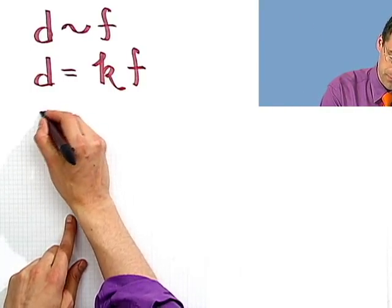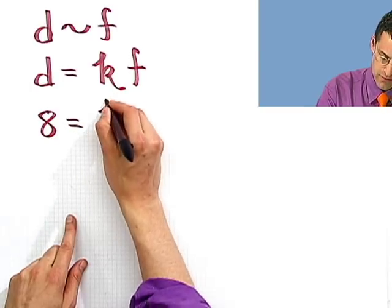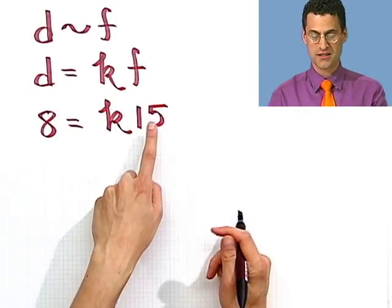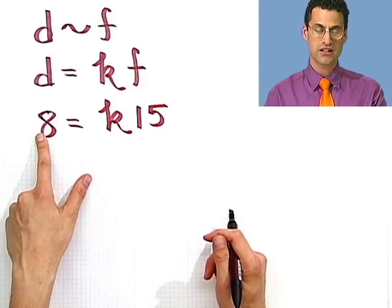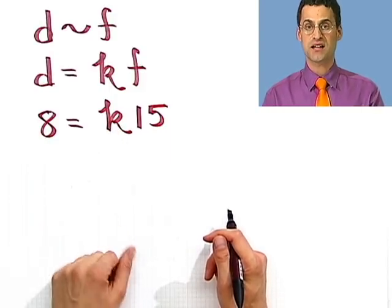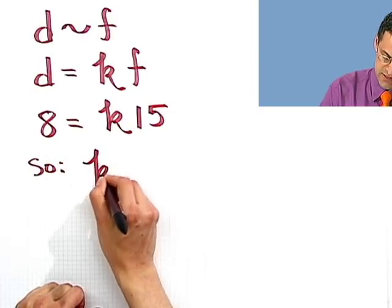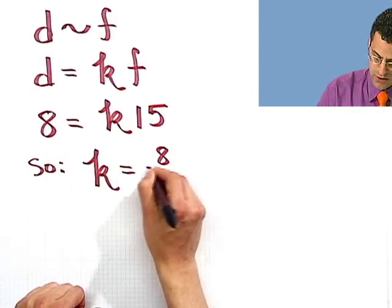So in fact, if I put in 8 here and 15 here, I know this has to hold. Because with a force of 15 pounds, I know it stretches 8 inches. This allows me to solve for k. So what I see is that constant is 8 over 15.